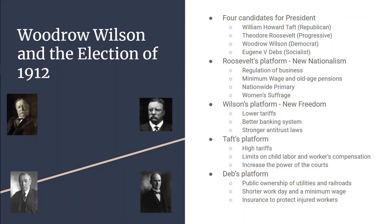All four of these people had very different reasons for running. Teddy Roosevelt's platform was called New Nationalism. He wanted to regulate businesses, a minimum wage, a pension for old age people, a nationwide primary, and women's suffrage.